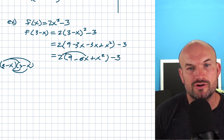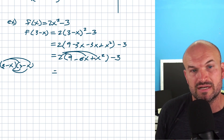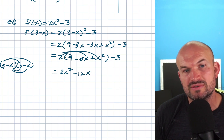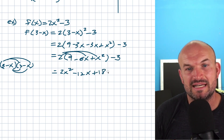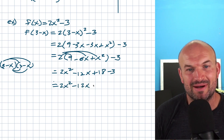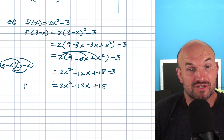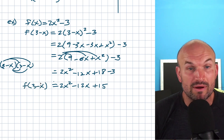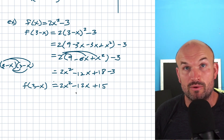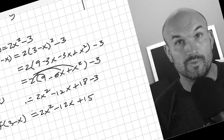Now we distribute the 2 and relabel in descending order: 2 times x squared gives 2x squared, 2 times negative 6x gives minus 12x, and 2 times 9 gives positive 18, minus 3. Simplifying that last step gives us the final result. So f of (3 minus x) — when my input value is (3 minus x) — that is my new equation. The cool thing about functions is that input-output relationship: input, output, input, output.